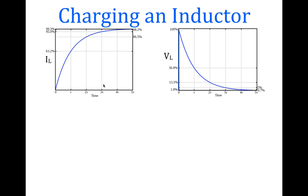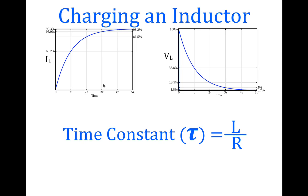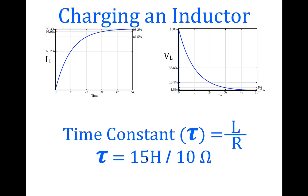The time is given in time constants. The time constant gives us a sense of how long it takes the current to reach its maximum, or how long it takes the voltage across the inductor to come back to zero. The time constant for RL circuits is calculated as the inductance divided by the resistance — L divided by R. For RC circuits it's R times C. So if we have a 15 Henry inductor and a 10 Ohm resistor, the time constant would be 1.5 seconds.